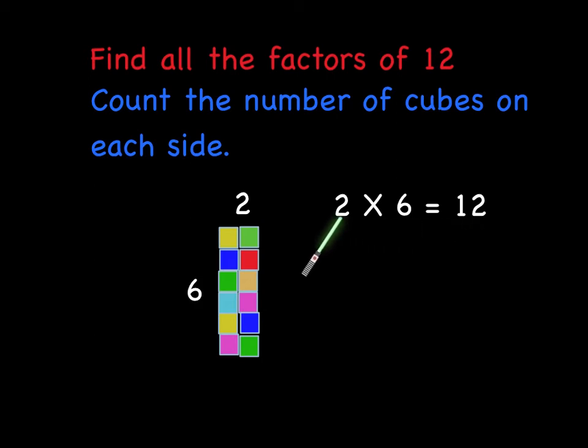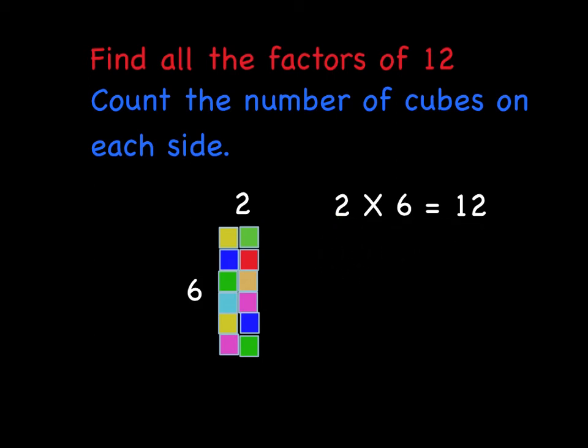So we can say that 2 times 6 equals 12. Or, in other words, 2 and 6 are both factors of 12. And so now we have 4 factors of 12: 1 and 12, 2 and 6.